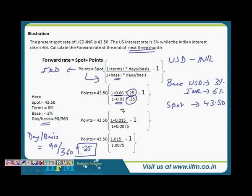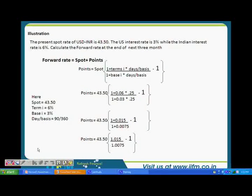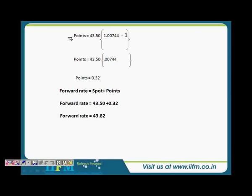We've just put that into the formula. This is actually a very simple calculation. You'll realize this becomes (1 + 0.015) divided by (1 + 0.0075) and then minus 1. Going further through the calculations, you'll realize this is 43.5 × (1.00744 - 1) or 43.5 × 0.00744. So your IRD or interest rate differential will be 0.32.